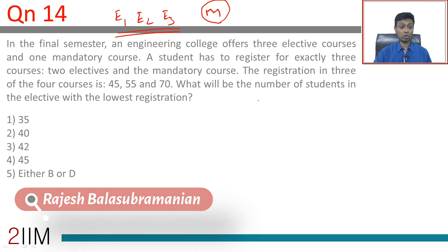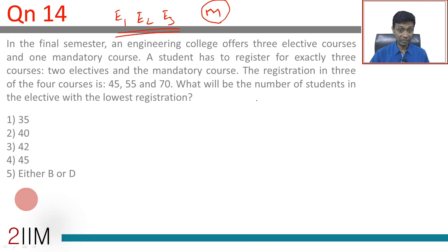The registration in three of the four courses is 45, 55 and 70. What will be the number of students in the elective with the lowest registration?